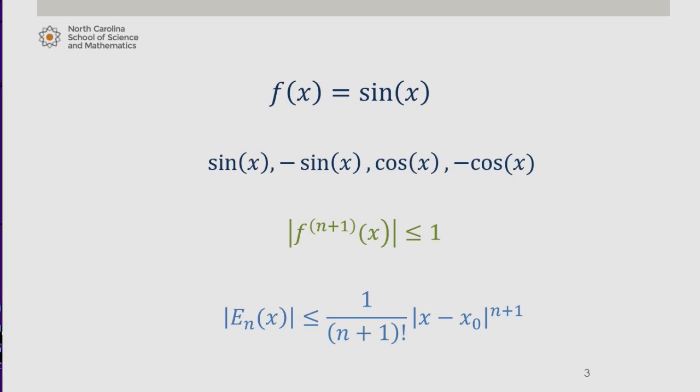But what is our interval of interest? Well, we're considering the Taylor polynomial centered at 0, so x0 is 0. Since we're investigating the error involved in approximating sine of 1, the other side of our interval is 1.